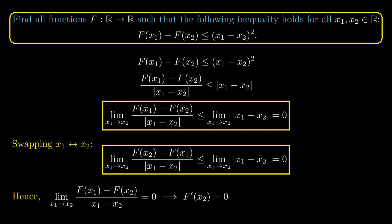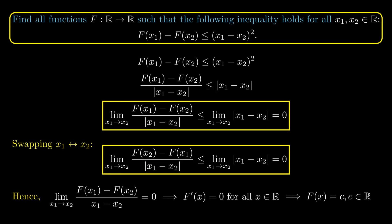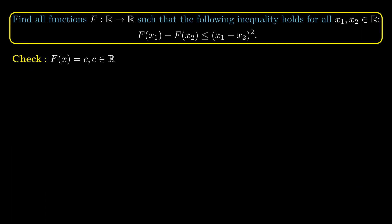Since x_2 is an arbitrary real number, this implies the derivative of f is zero at all real numbers. The only functions with derivative identically equal to zero are the constant functions, f(x) = c. We can verify this works by plugging into the given inequality: the left-hand side reduces to zero and the right-hand side is always non-negative.